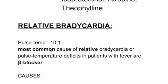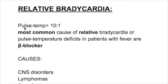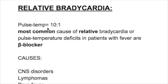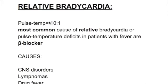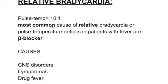What is relative bradycardia? The pulse-temperature ratio is 10 to 1, meaning that if there is a rise in temperature by 1 degree, the heart rate increases by 10. But in certain conditions, the heart rate does not increase proportionally with the rise in temperature — it does not increase that much. This is called relative bradycardia.